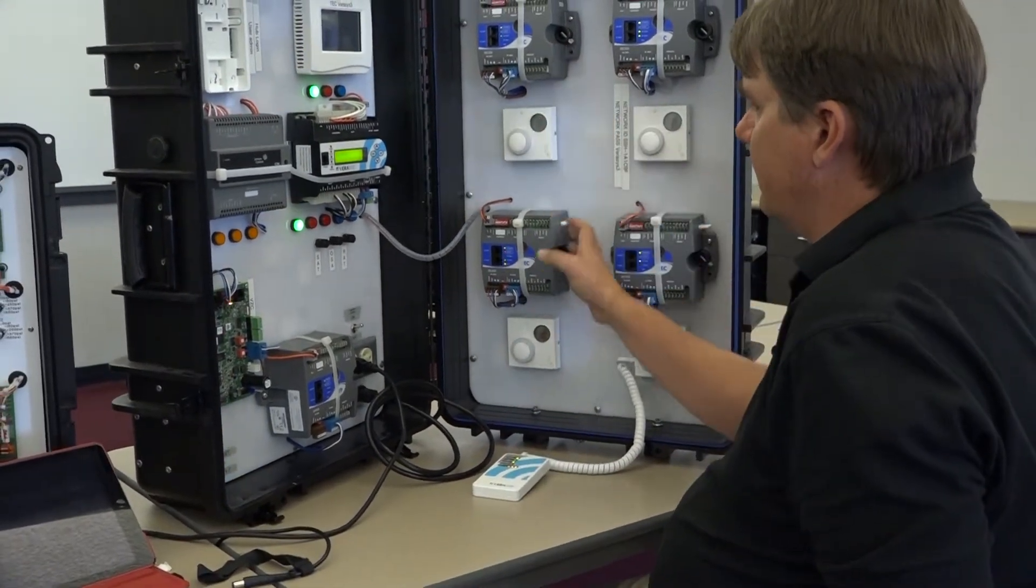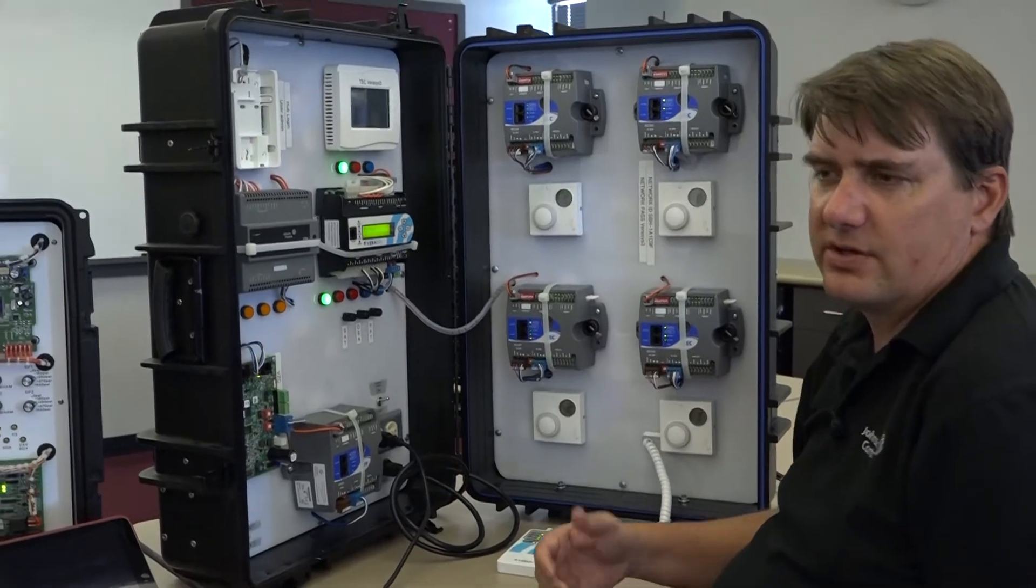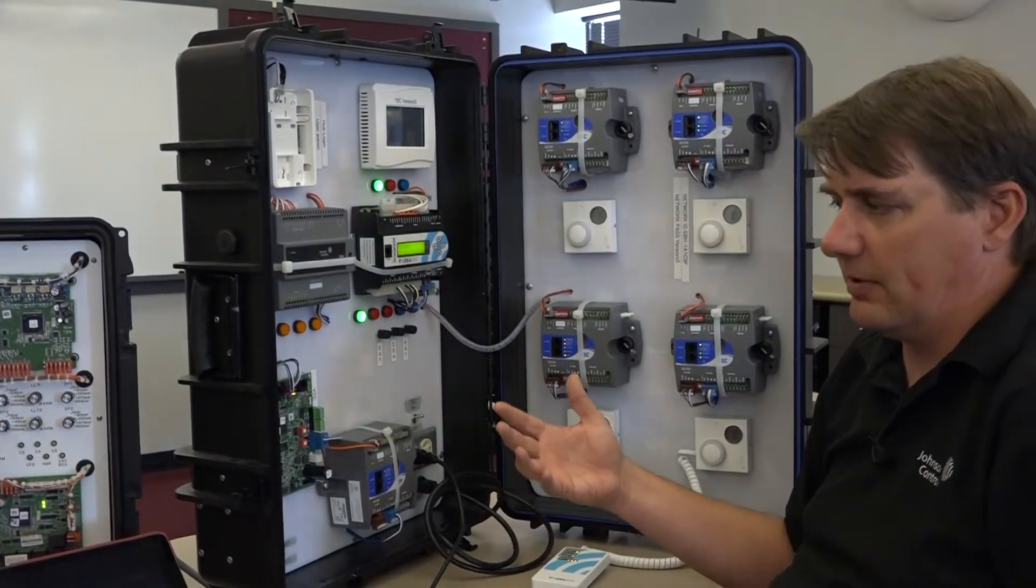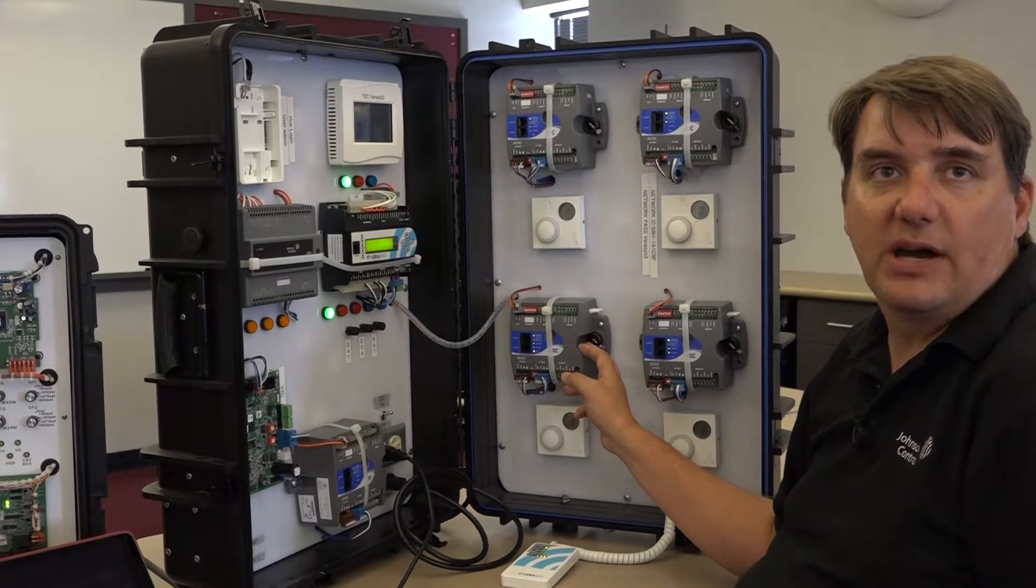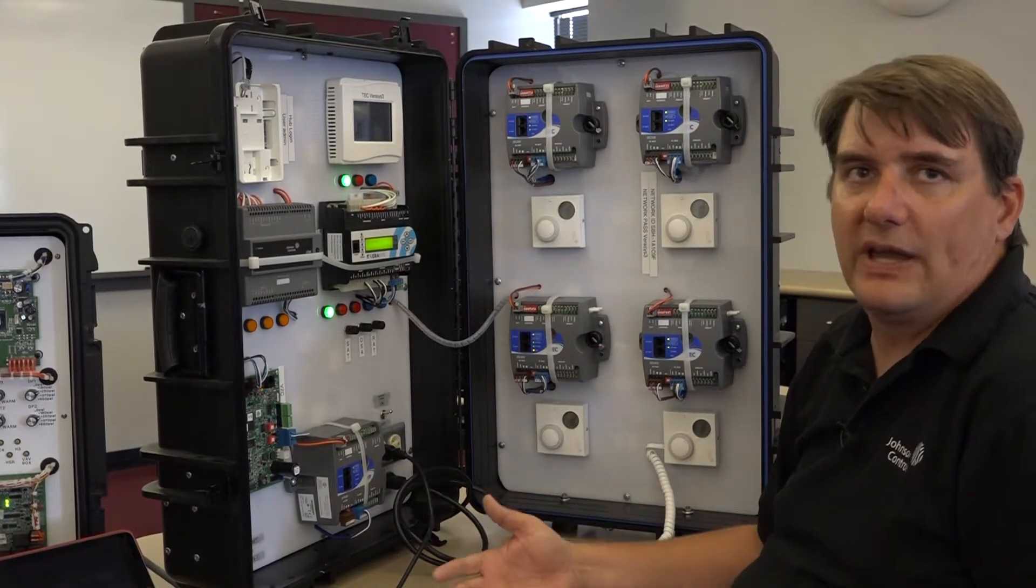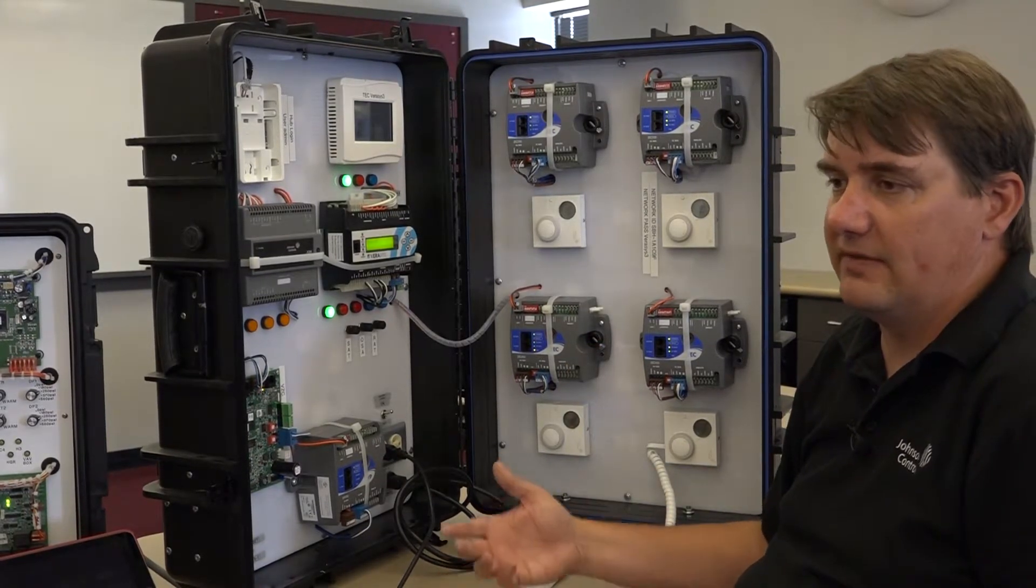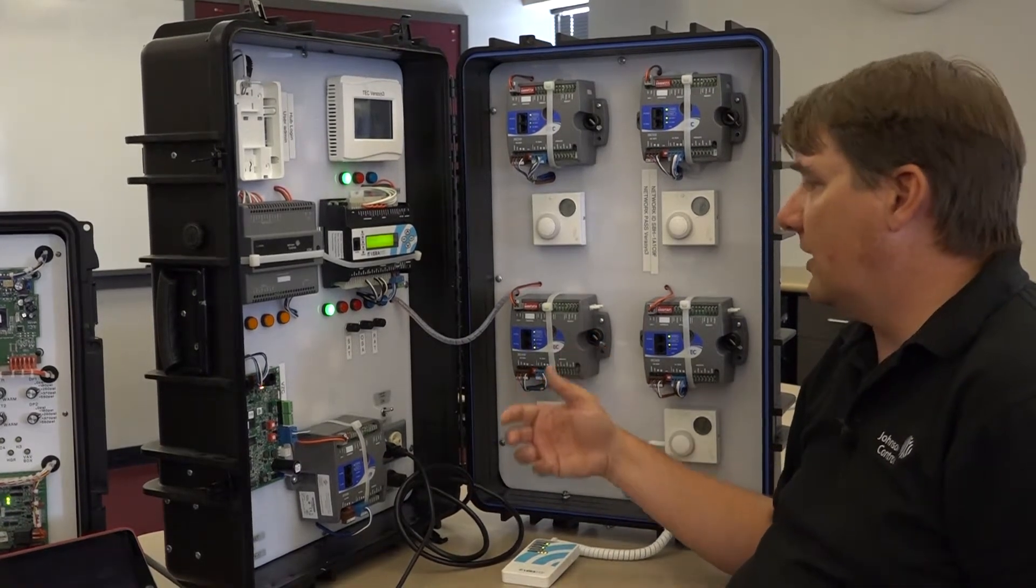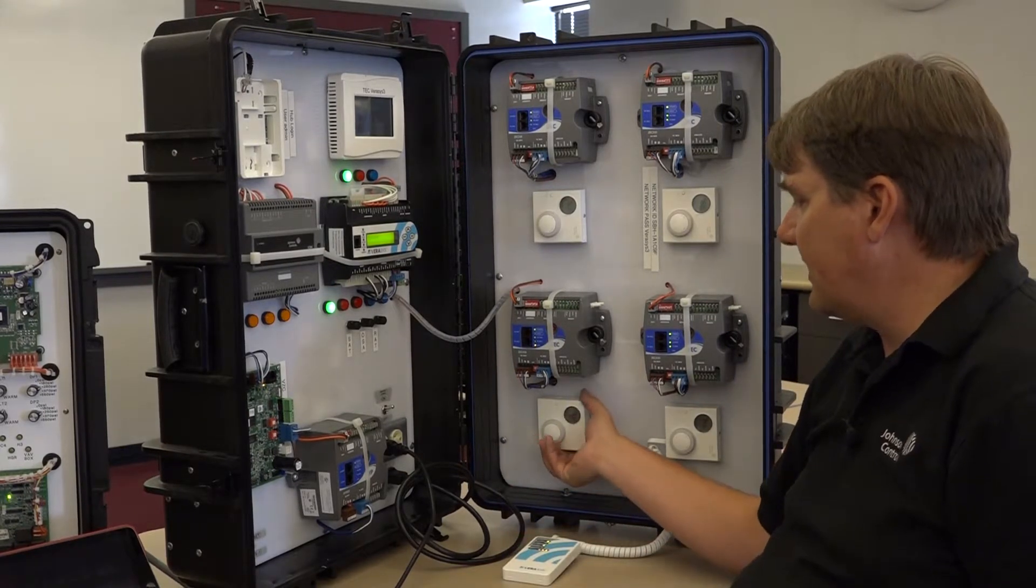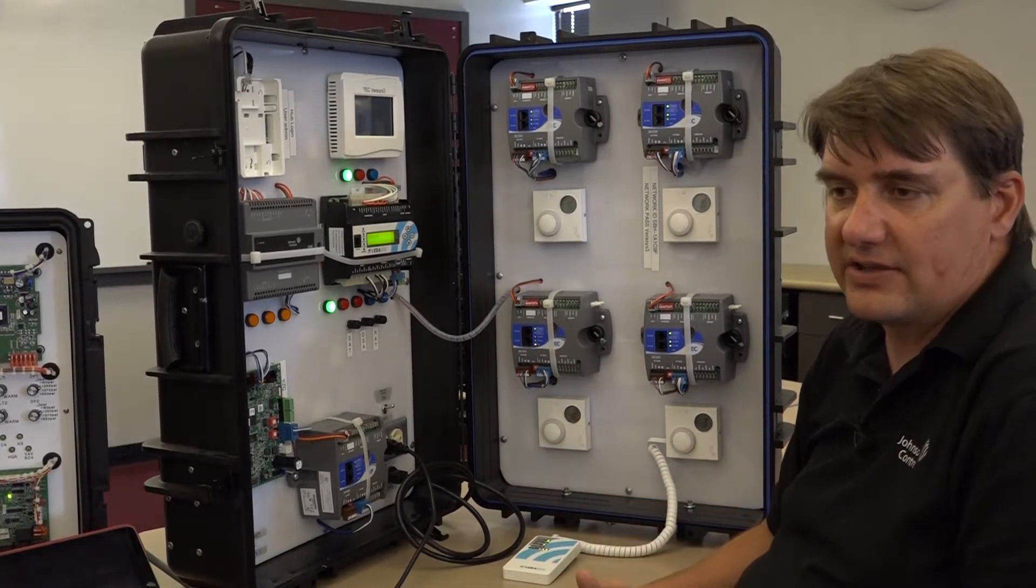On a ZEC410 which is a VAV controller there's several parameters. There's probably about a dozen parameters that need to get set up for each VAV box. So there's multiple ways to set up a VAV and set up those parameters. You can do it through either a balancing stat which looks a lot like your net stat that will allow you to set that.